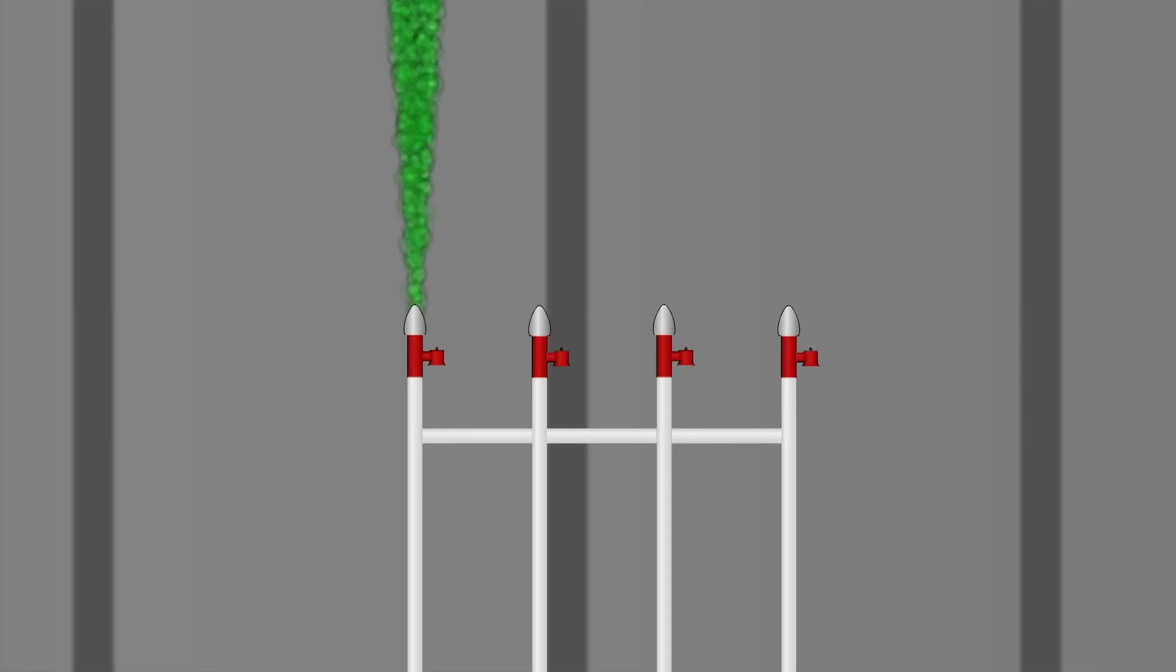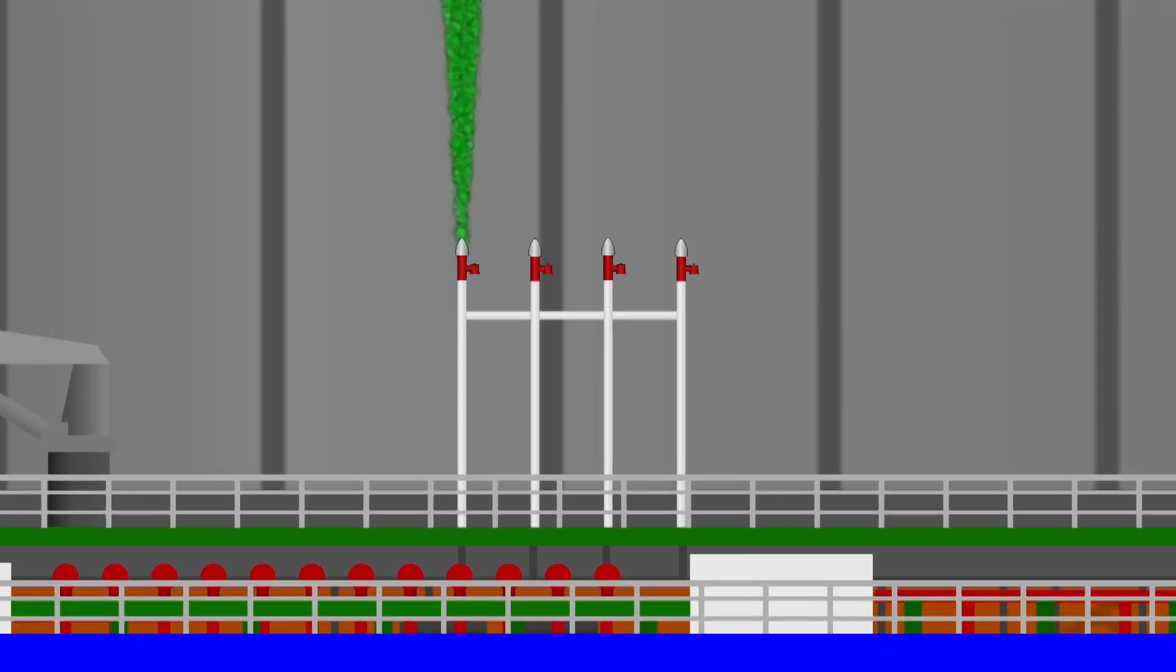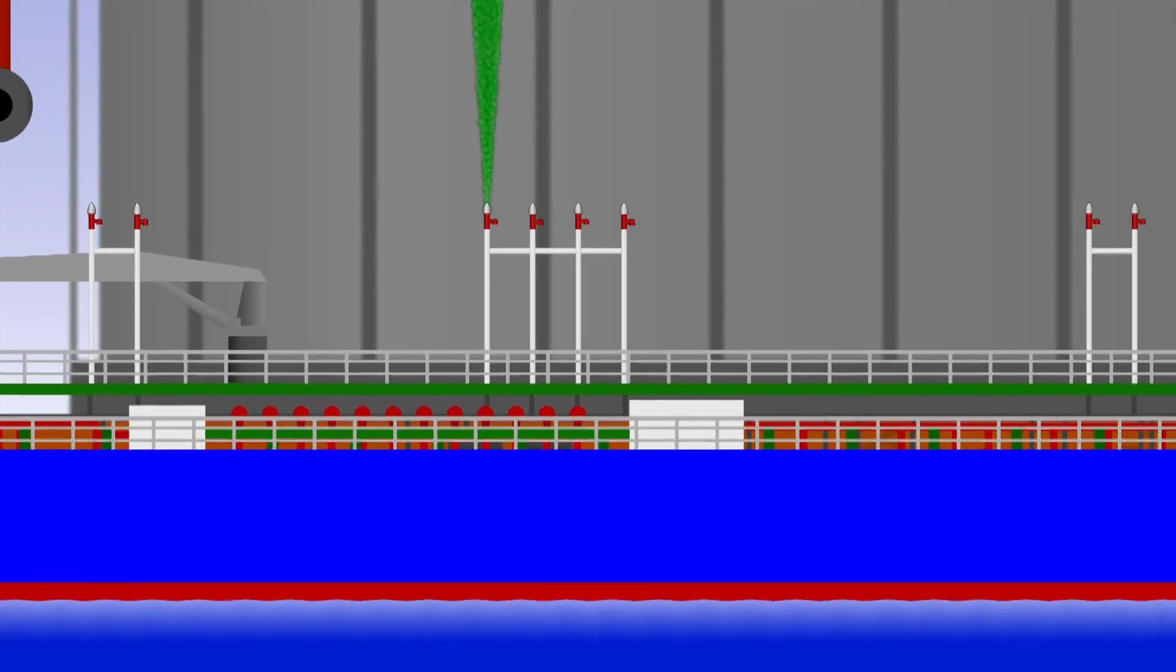When it comes under pressure, it uses that pressure to safely blast the excess gas clear of the vessel. These valves are often grouped together high above the hull of the ship.